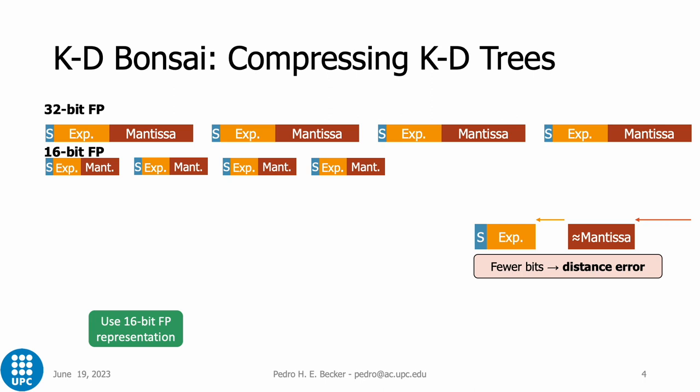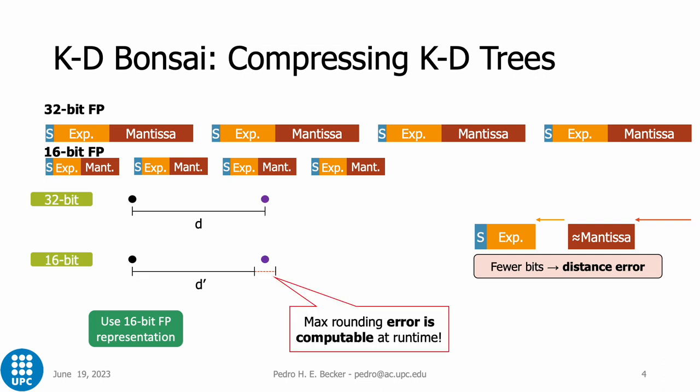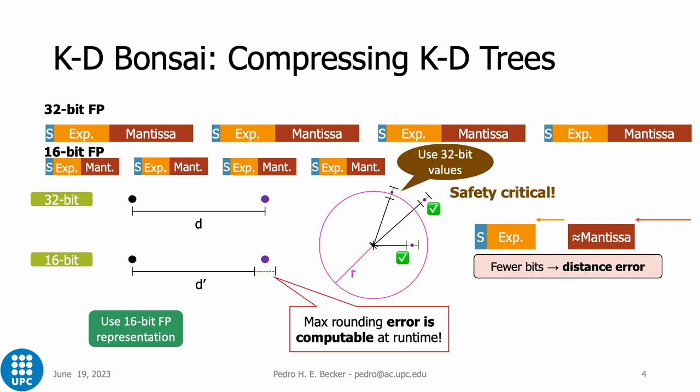We also derive an equation to compute a maximum error for the distance computation when operating in the 16-bit representation. We use this to identify whether the classification of points in or outside the radius are still valid despite the error, also identifying uncertain results, in which case the original uncompressed points can be used to guarantee full precision accuracy, even if using fewer bits. Sustaining accuracy is very important for safety-critical applications, such as autonomous driving.